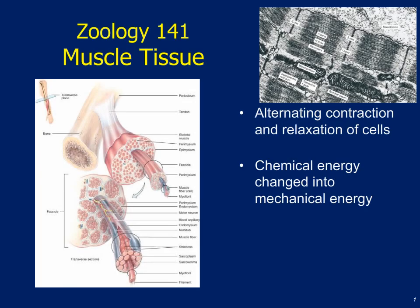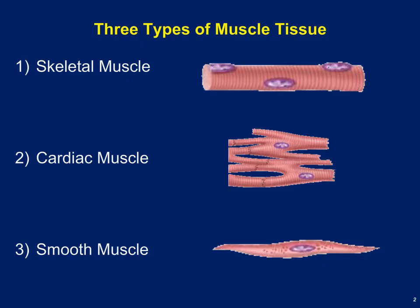Hello and welcome back to Zoology 141. Today's lecture is on muscle tissue and muscle physiology. We did talk about muscle tissue a couple chapters back when we talked about connective tissues and epithelial tissues. There are three different types of muscle tissue: skeletal muscle, cardiac muscle, and smooth muscle. We're going to talk briefly about the properties of all three, and then spend the rest of the time talking mainly about skeletal muscle.